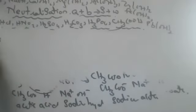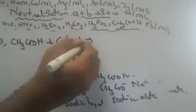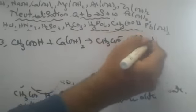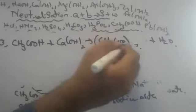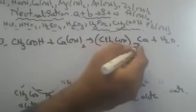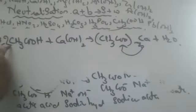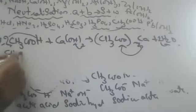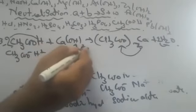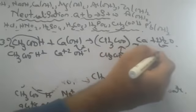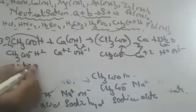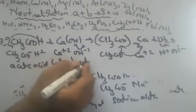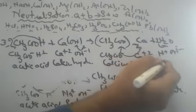Third reaction: CH₃COOH plus calcium hydroxide. Since calcium is plus two, two acetate ions are needed, so the formula is (CH₃COO)₂Ca — calcium acetate. Balance: two CH₃COOH gives two acetate ions, and two OH gives H₂O times two. The word equation: acetic acid plus calcium hydroxide gives calcium acetate plus water.